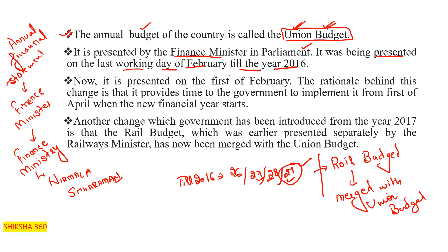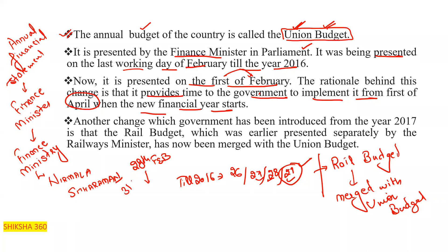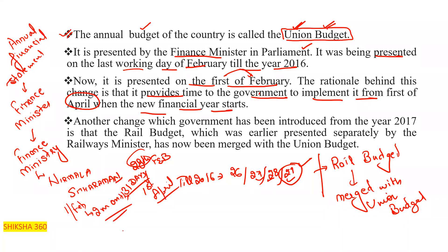Now the budget is presented on the 1st of February. The rationale behind this change is that it provides time to the government to implement it from the 1st of April when the new financial year starts. Earlier, presenting on the 28th of February gave only one month to implement. Now with a February 1st presentation, they have at least two months to formulate all guidelines and implement properly.